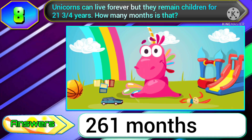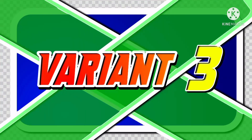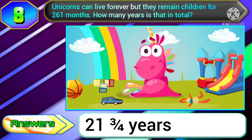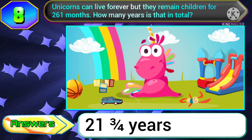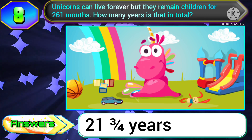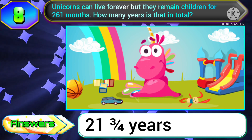In variant two of this question, if the question comes as: unicorns can live forever but they remain children for 21 and three-quarters years — how many months is that? The answer will be 261 months. In variant three, if they ask: unicorns can live forever but they remain children for 261 months — how many years is that in total? The answer will be 21 and three-quarters years.